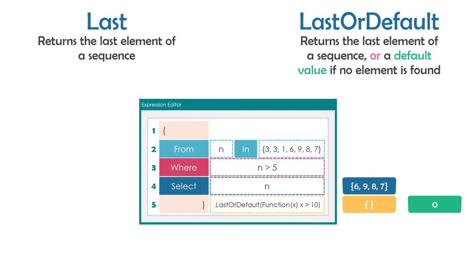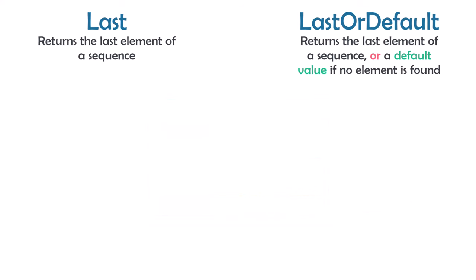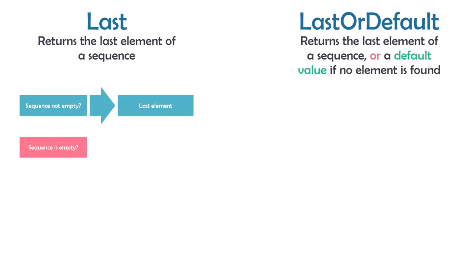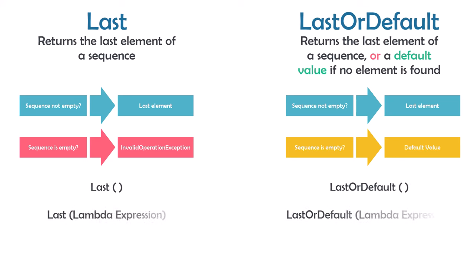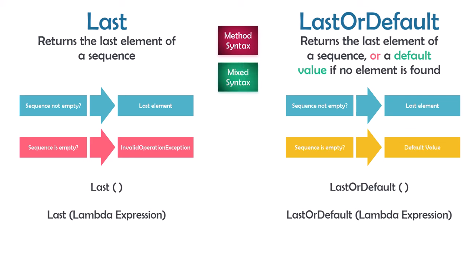Let me summarize both operators. Both return the last element from a sequence. For Last: if the sequence is not empty you get the last element; if it is empty, an InvalidOperationException is thrown. For LastOrDefault: if the sequence is not empty you get the last element; if it is empty, you get the default value, which depends on the data type — zero for integer, false for boolean, and so on. Both operators can be used with empty brackets or with a lambda expression, and only in method syntax or mixed syntax.